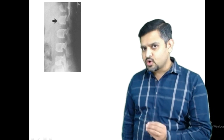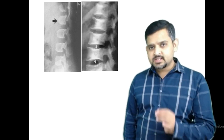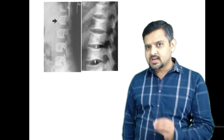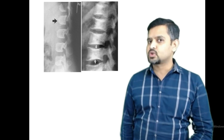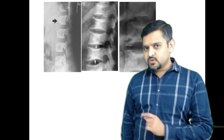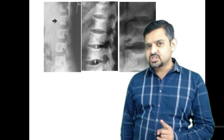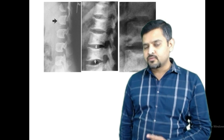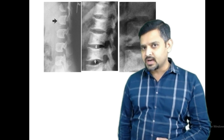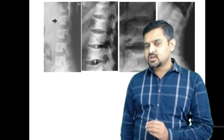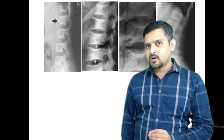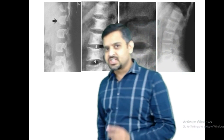This is a typical bullet-shaped vertebra of Achondroplasia. This is a classical fish mouth appearance of severe osteoporosis. This is an H-shaped vertebra of sickle cell anemia, and this is a picture frame vertebra of Paget's disease.